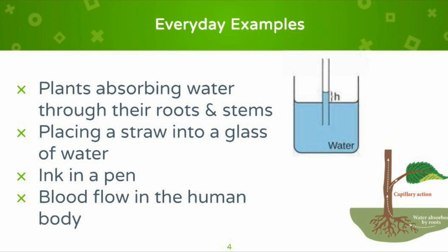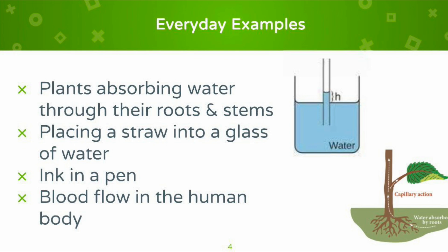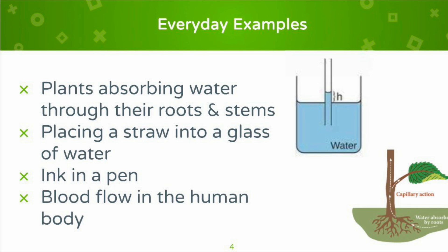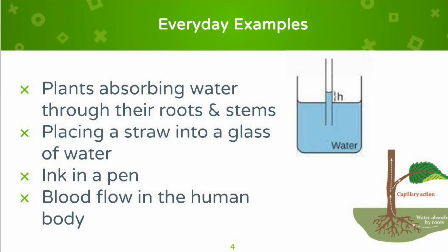Another example is blood flow in the human body. Capillary action is super important for circulating blood in our body because blood actually moves through capillaries — which gives you a little hint. This is super important for exchanging nutrients, gases, and waste products between blood and surrounding tissues. So capillary action is so important for life to be able to exist.